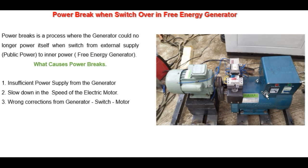When you switch over from the external power supply to internal, there is automatically a break in transmission. That break in transmission is what causes the electric motor to slow down. In the process of switching over there is a break in supply, and that break in supply makes the electric motor slow down. As it slows down, the generator cannot supply the required voltage to enable the electric motor to continue in motion.